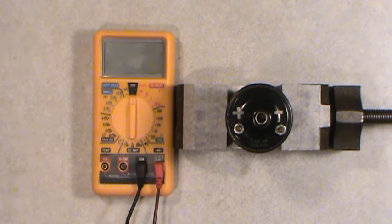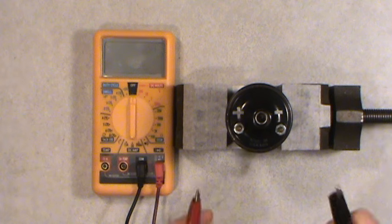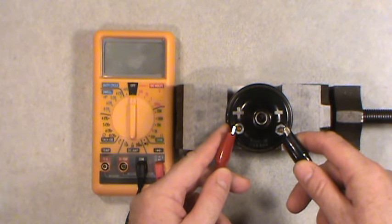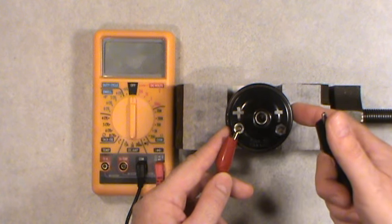Alright so there are two basic readings that we are after, there is going to be a low ohms reading between these two terminals here, that is for your primary coil, there are actually two coils that are contained within this canister here.